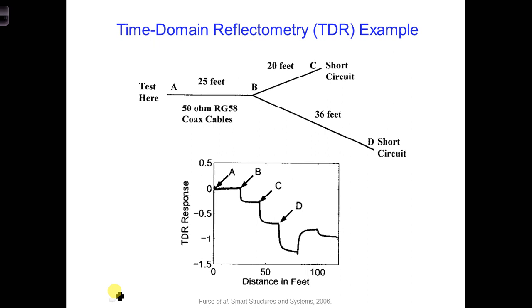When we study the reflections that occur along a conductor, it's called time domain reflectometry, or TDR. For a TDR measurement, a time domain reflectometer sends an incident signal down the conductor, and then the reflectometer records any reflections. Based on how long it takes for the reflections to reach back to the reflectometer, a distance to the impedance discontinuity can be determined.